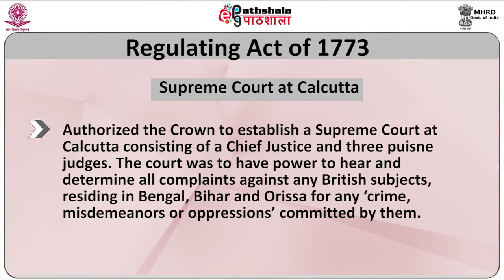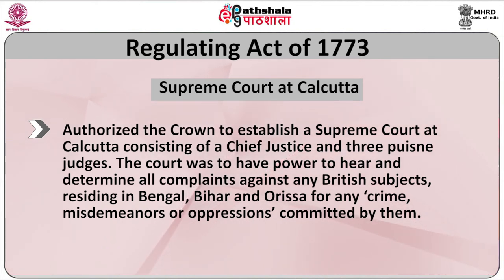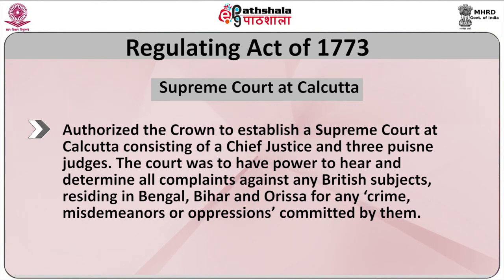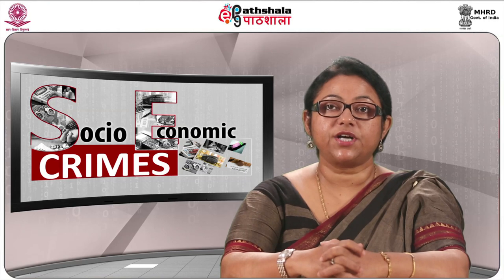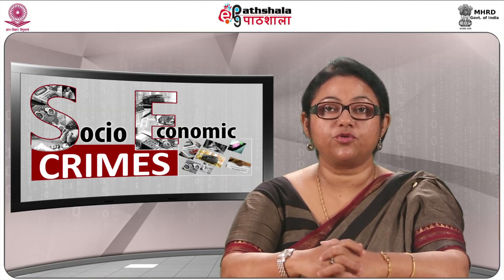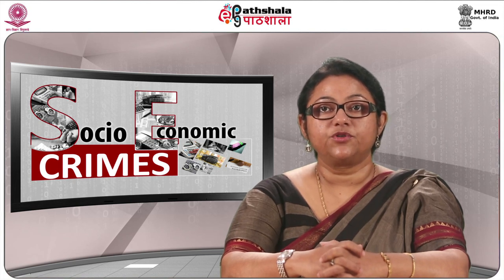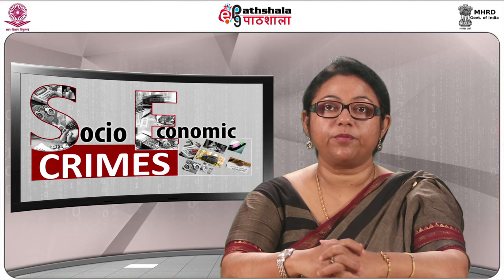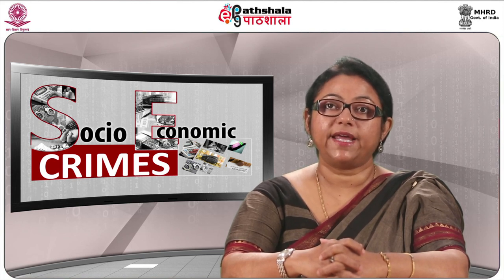The Regulating Act of 1773 authorized the Crown to establish a Supreme Court at Calcutta consisting of a Chief Justice and three other judges. The court was to have power to hear and determine all complaints against any British subjects residing in the territories of Bengal, Bihar, and Orissa for any crime, misdemeanors, or oppressions committed by them. The charter granted under this act gave to the Supreme Court all the authority of the Court of King's Bench in England. Supreme Courts similar in all respects to the Supreme Court of Calcutta were established in Madras in 1800 and in Bombay in 1823.